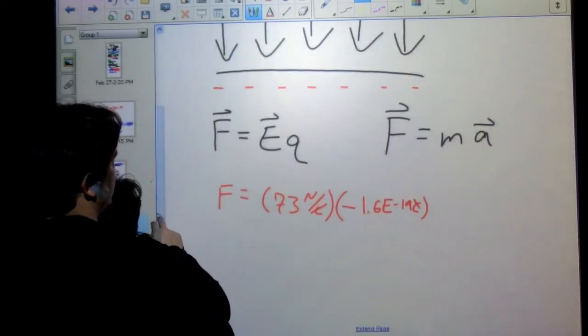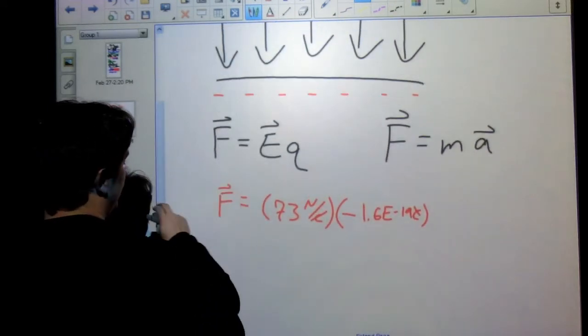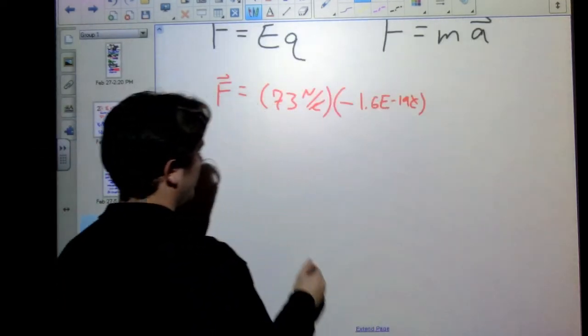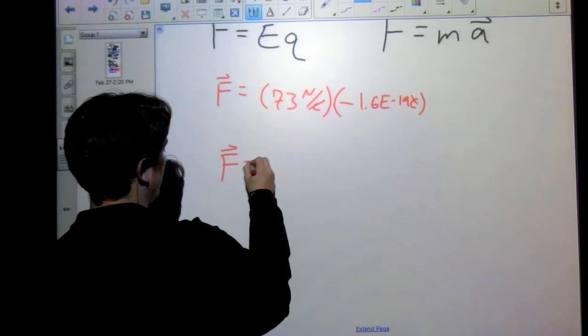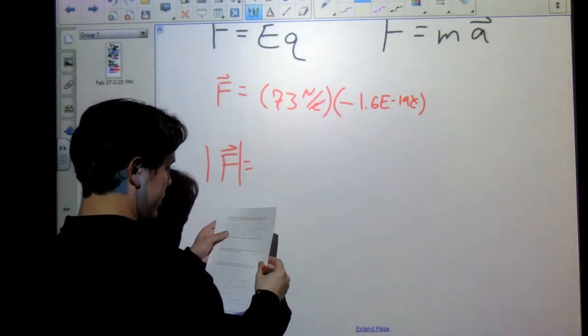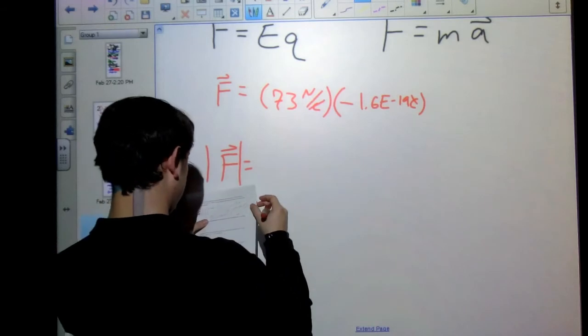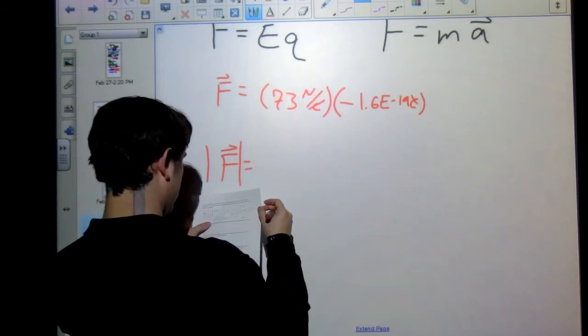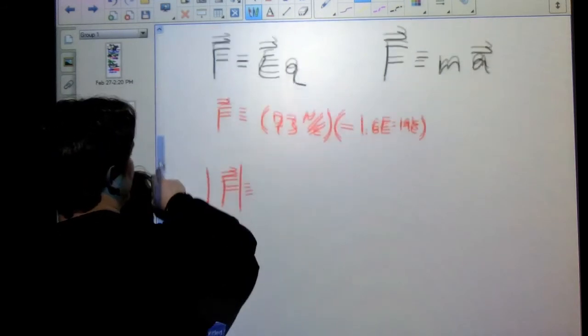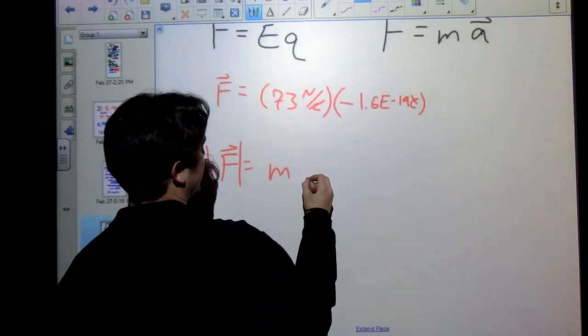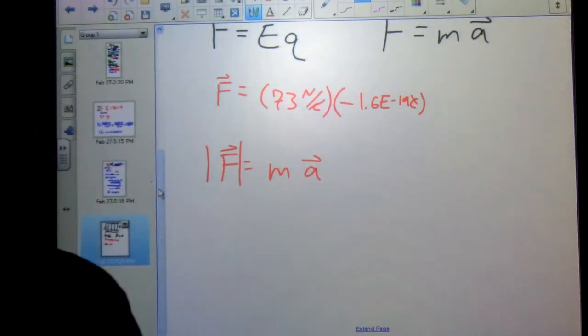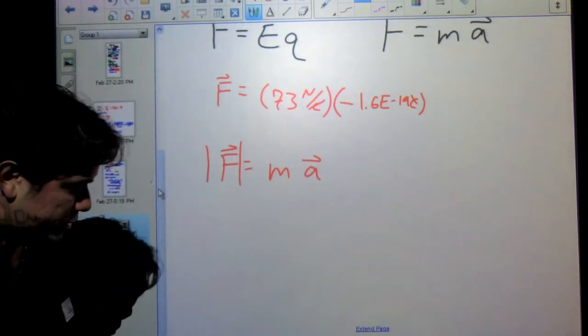Our coulombs cancel out and we're left with newtons, giving us a force, which is good. When we're dealing with electric forces here, the negative on the force will tell us there's an attraction for point particles. Don't let the negative get you too confused because again with forces, we're going to keep track of a direction by taking a look at it and seeing which way it's going to go.